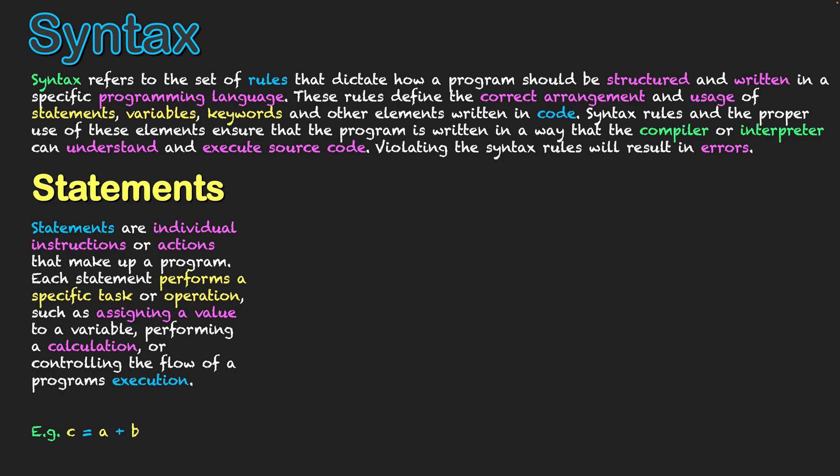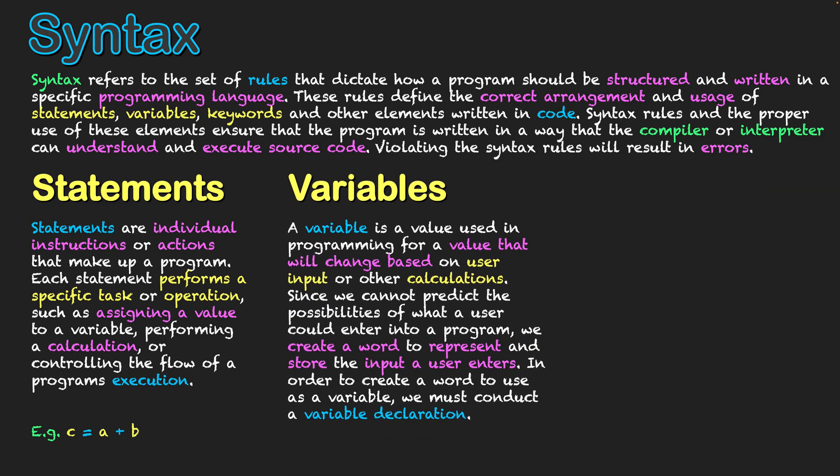I've already used the word variable there because you can see c, a, and b are all variables. They're all values that are going to be assigned either by the program's calculations or potentially by user input. Let's jump over then to variables. A variable is a value used in programming for a value that will change based on user input or other calculations. We're expecting these variable values to change. They are like a placeholder value that we give a name to, and then essentially it will be assigned a numeric or text-based string value later on in the program as it goes through its processes.